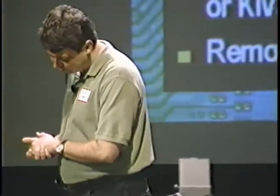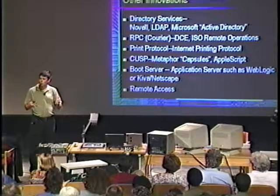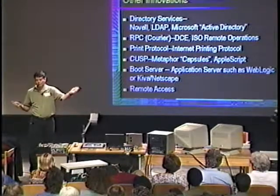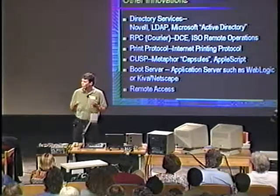Remote access — the ability to, from someplace remote like your home or out in the field, dial in through a modem and be connected transparently to the network at the other end — caused Alan Fryer no end of grief trying to make it all work. But it really looked like you were on a very slow Ethernet connection. That's extremely popular now in the nomadic world where everybody carries a notebook computer and has to dial in to get work done.